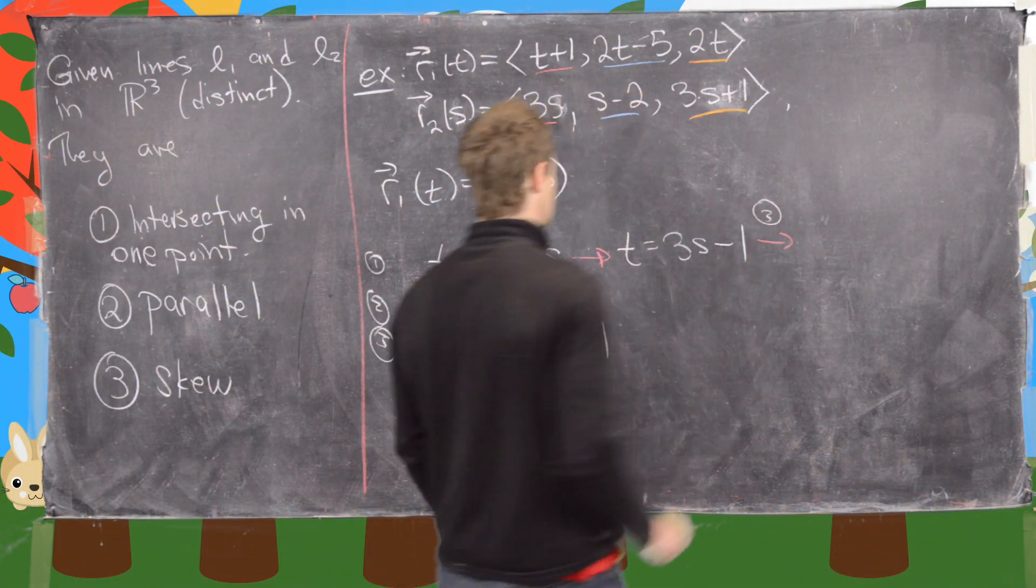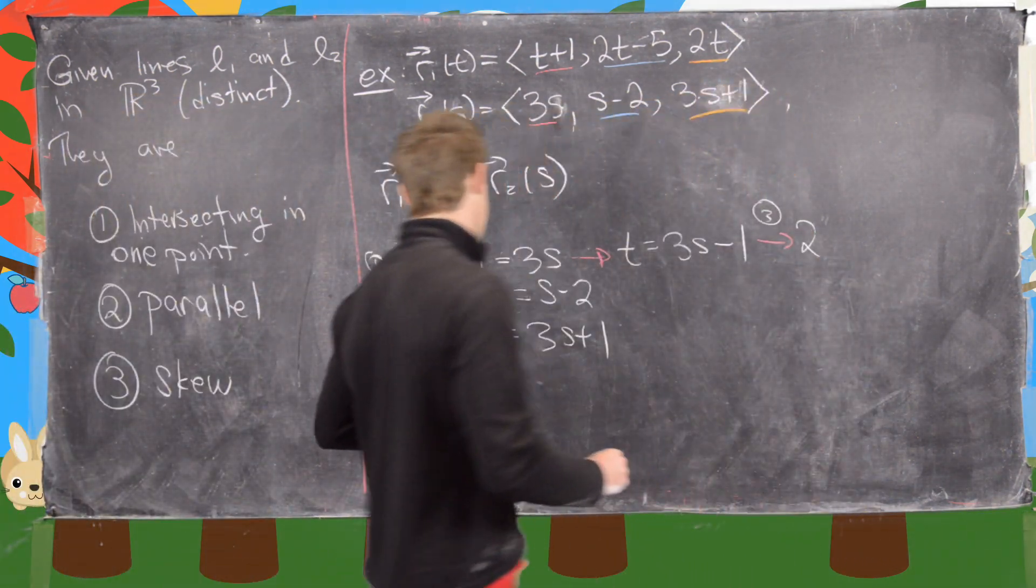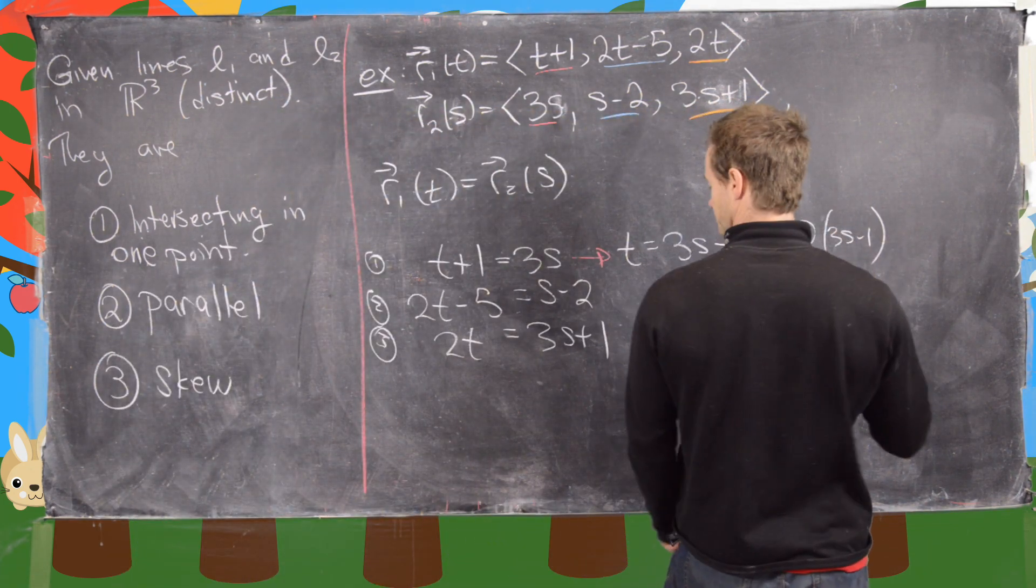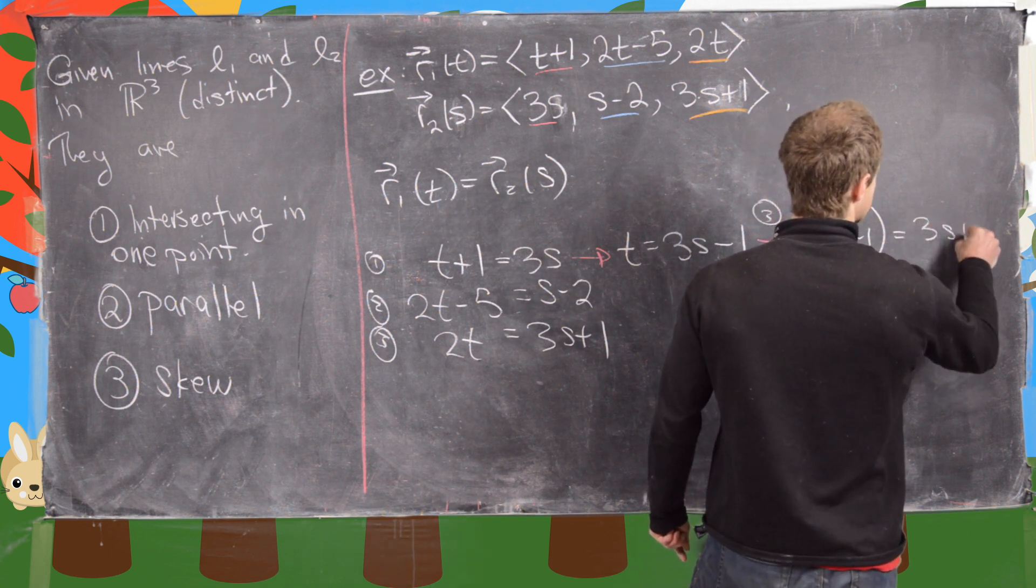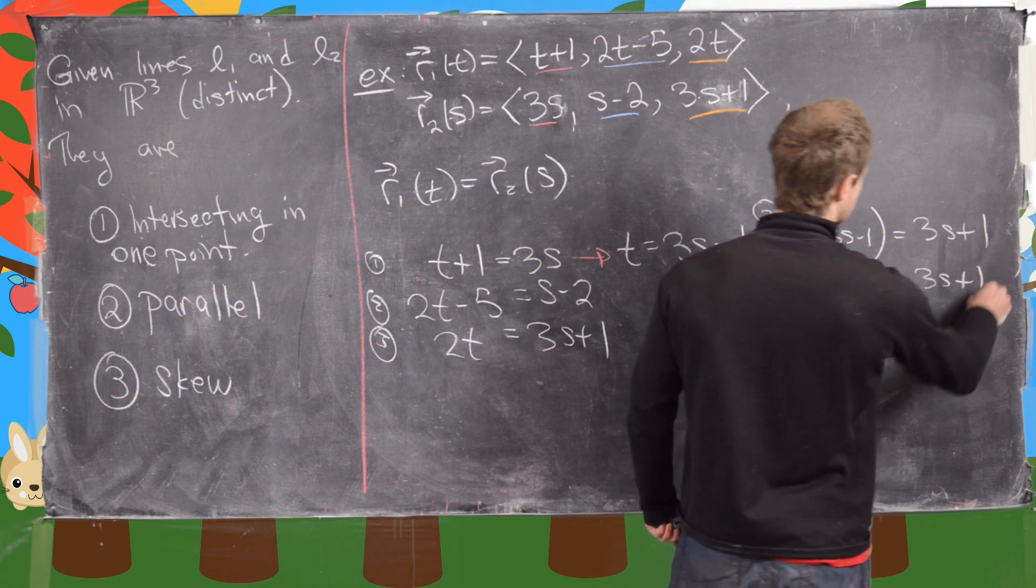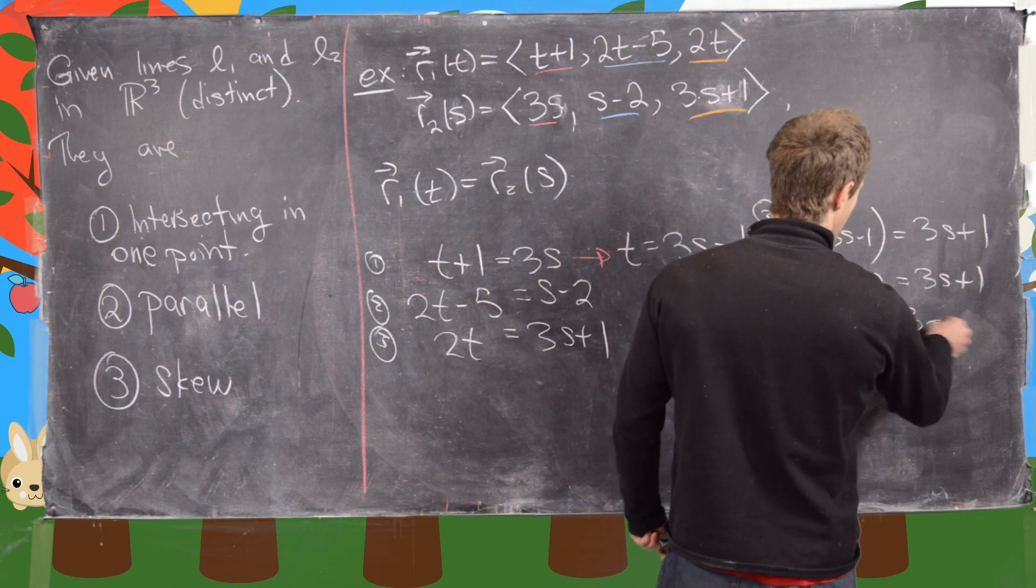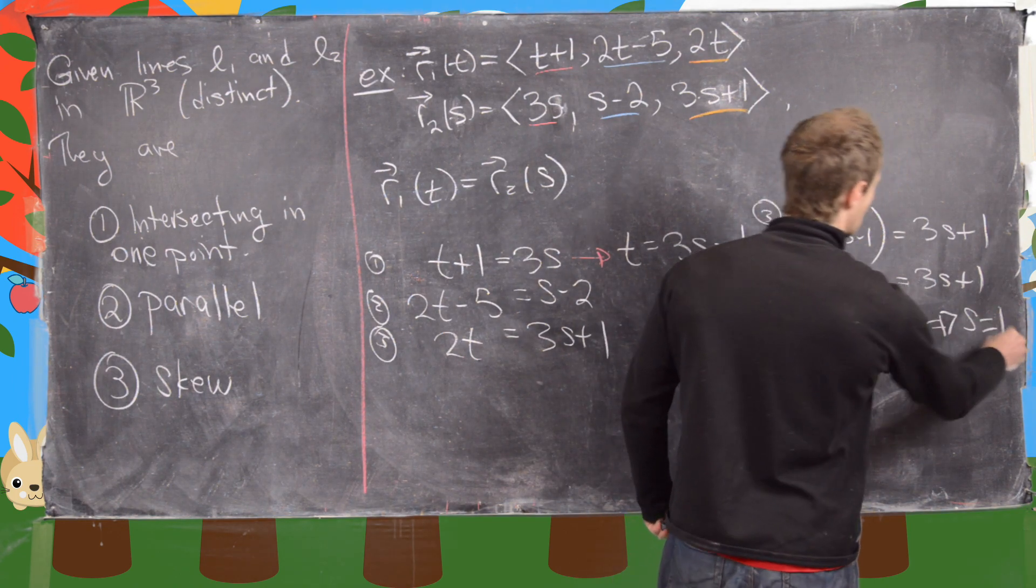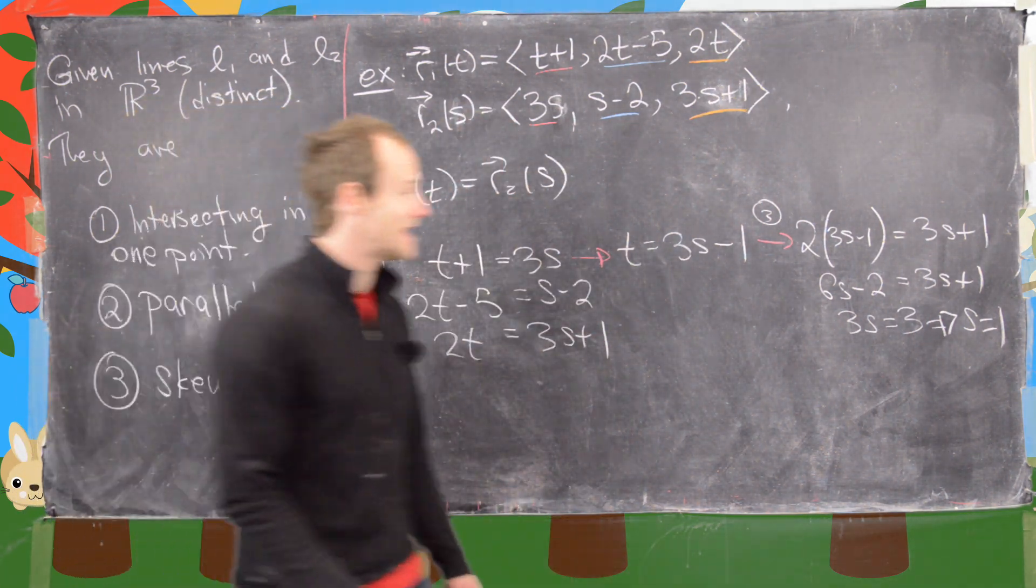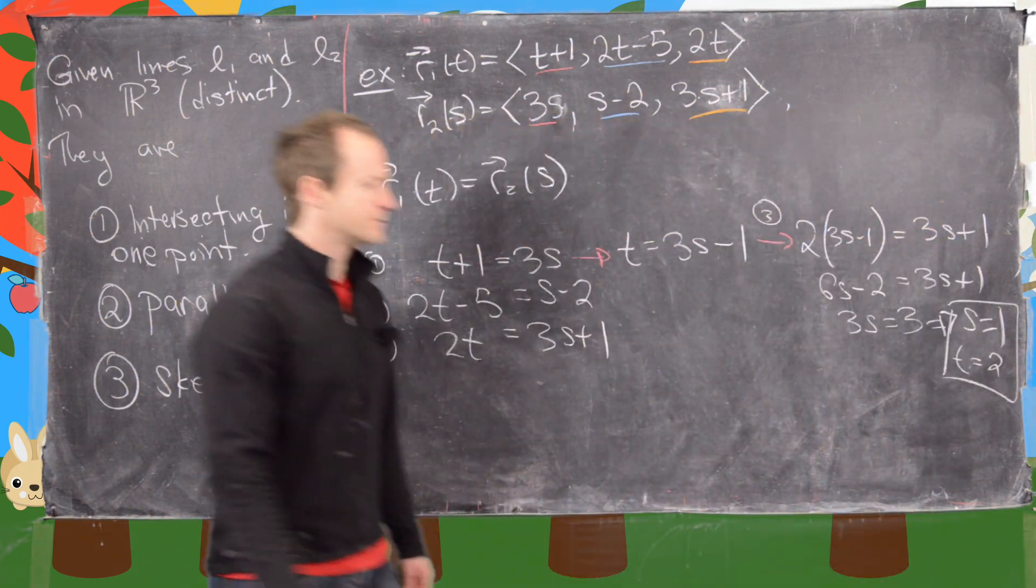Plugging that into equation 3 gives me 2 times (3S minus 1) equals 3S plus 1. So 6S minus 2 equals 3S plus 1. Moving things around, I get 3S equals 3, which tells me that S equals 1. Furthermore, I can put that into my equation for T and get T equals 2.